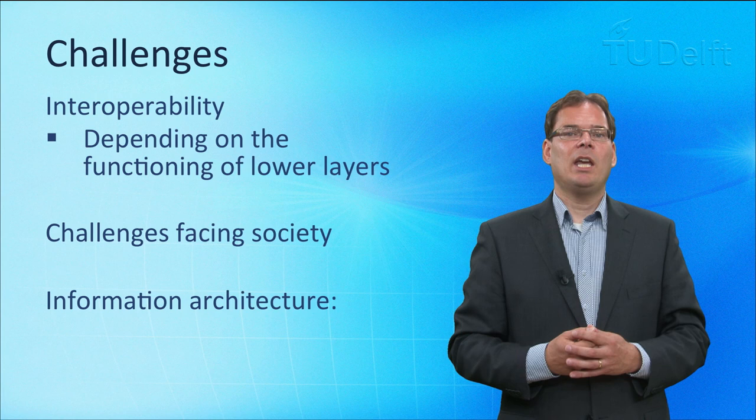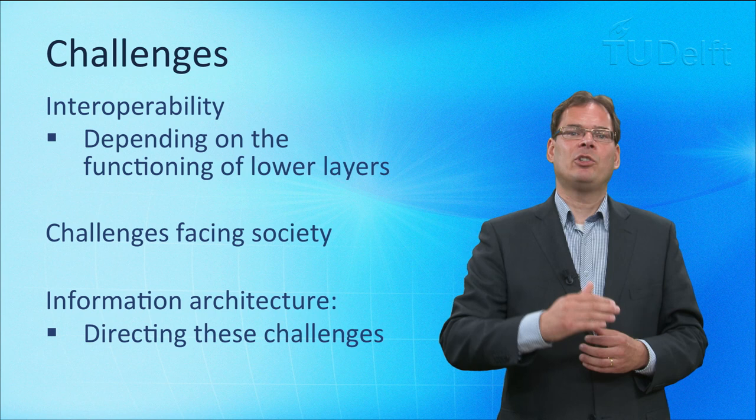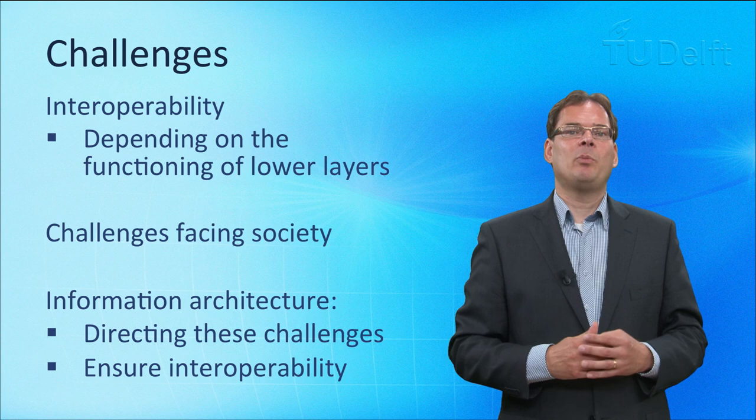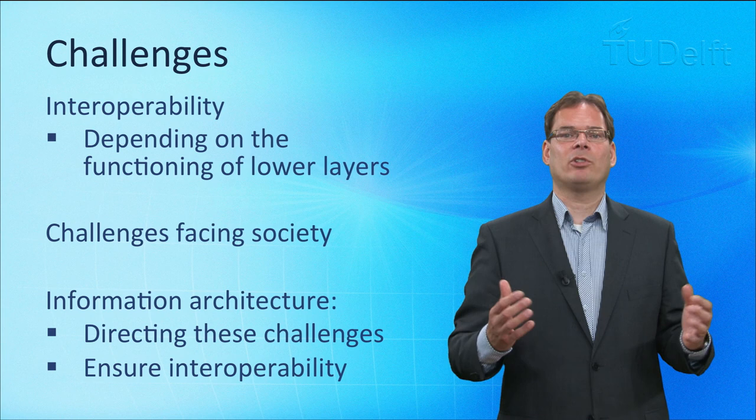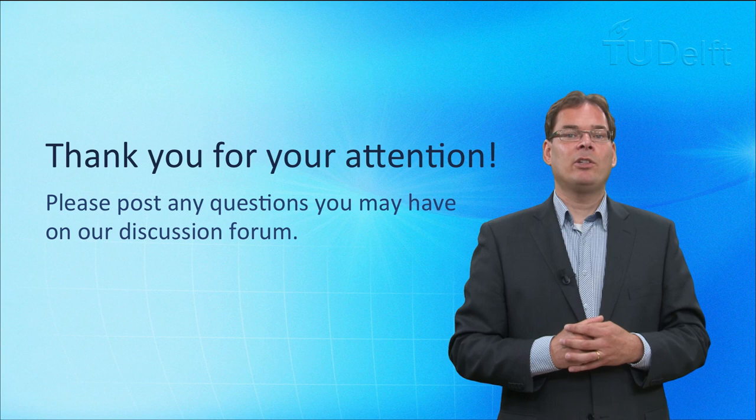Information architecture aims at directing the design and development of ICT. Information architecture contains decisions made at each of the levels to ensure interoperability. The ICT infrastructure outlined here needs to be flexible enough to deal with changes originating from all kinds of sources. In the next lecture we will focus on principles for creating flexible information architecture to meet the challenges of the future. Thank you very much for your attention, and I hope that you have enjoyed the lecture.